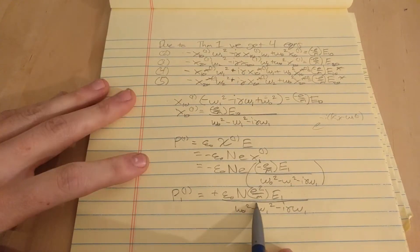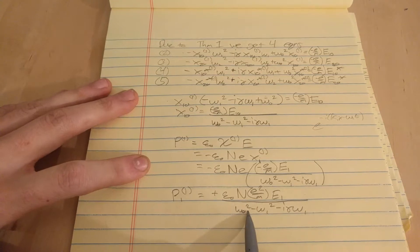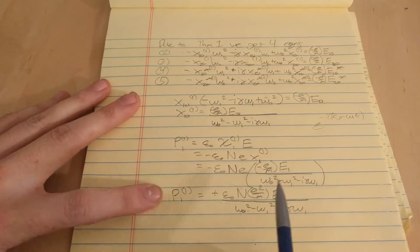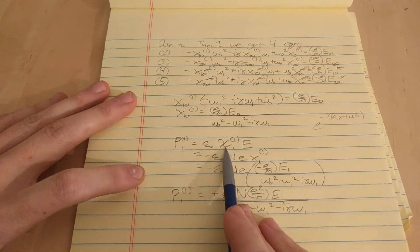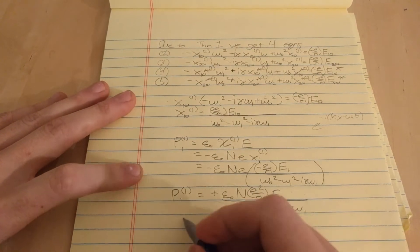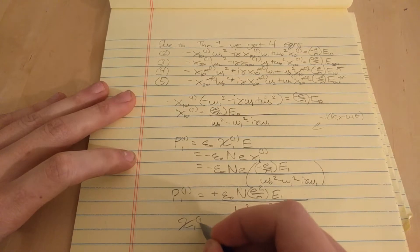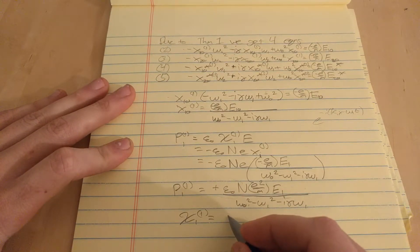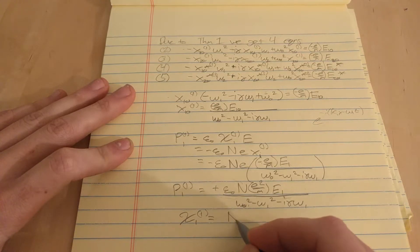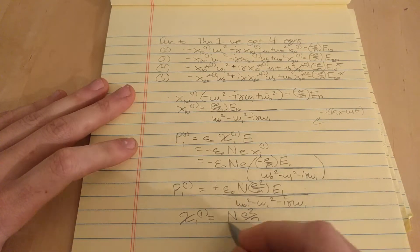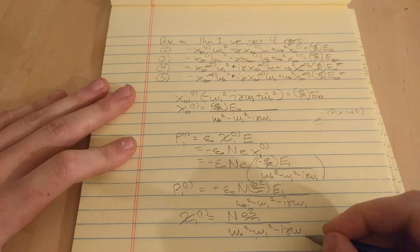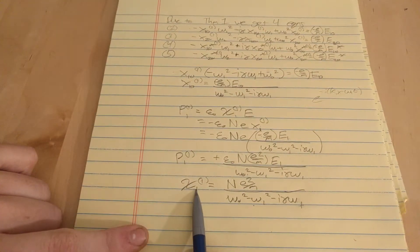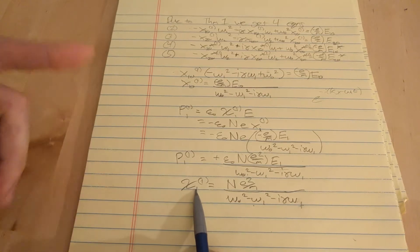Okay, so now we have this. So now, we compare this part to this part up here. And we can solve for chi1. And we see that chi1 is this. So that is our linear susceptibility at the one frequency.